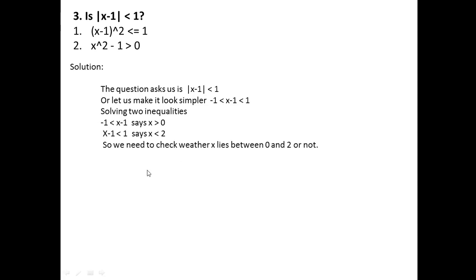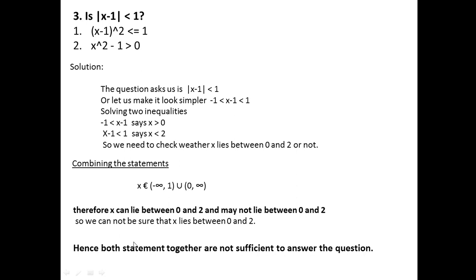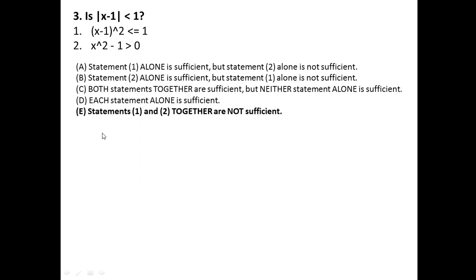Let us combine the statements. Even combining both, x can still take value 3/2 — which lies between 0 and 2 and satisfies both statements — or x can equal 4, which satisfies both statements but does not lie between 0 and 2. So we cannot determine whether x lies between 0 and 2 even when combining both statements. Hence, both statements together are not sufficient, and the right answer is option choice E.